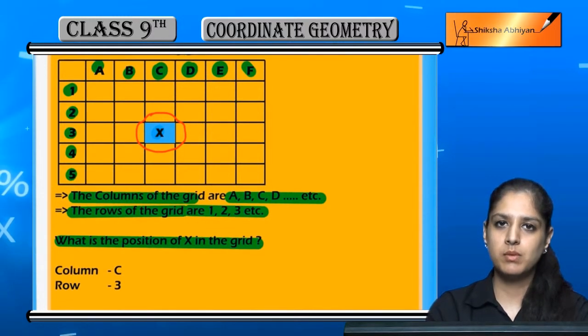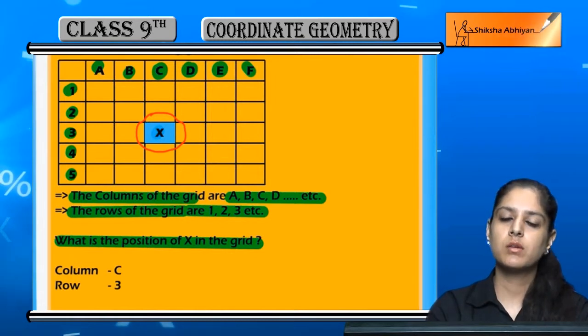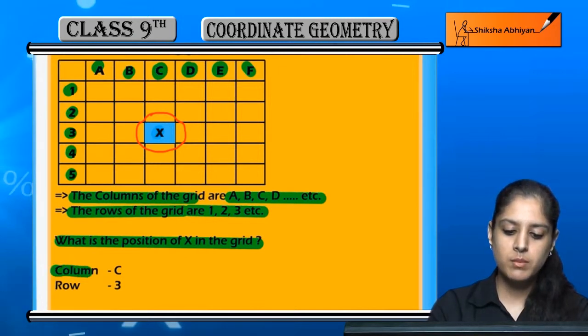We will see which column X is in and which row X is in. If we combine which column and which row it's in, that will give us its position.